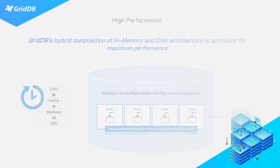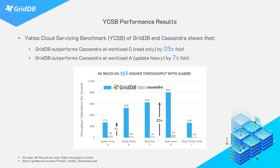Here are some hard numbers to show GridDB's superior performance. We ran YCSB benchmarks against Cassandra, the NoSQL database known for its speed, and GridDB fared really well. In read-only applications, GridDB is up to 25 times faster than Cassandra using the exact same configuration. When comparing update-heavy workloads, GridDB is still seven times faster.